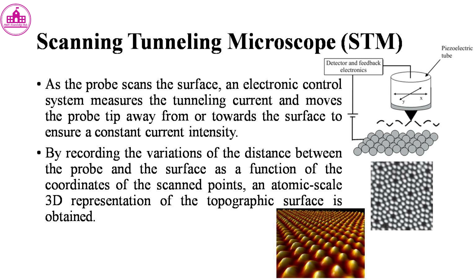As the probe scans the surface, an electronic control system measures the tunneling current and moves the probe tip away from or towards the surface to ensure a constant current intensity. By recording the variations of the distance between the probe and the surface as a function of the coordinates of the scan points, an atomic scale 3D representation of the topographic surface is obtained.